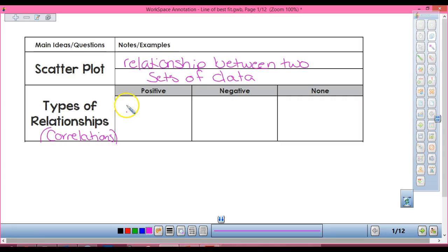If our two sets of data have a positive correlation, they are going to go uphill, just like our positive slope, right? If they have a negative correlation, they are going to go downhill, just like our negative slope.